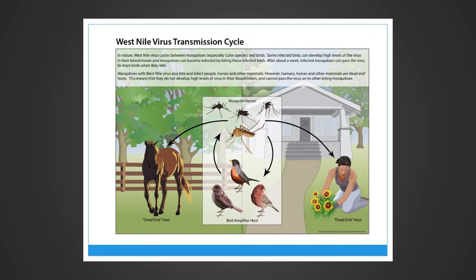In nature, West Nile virus circulates between mosquitoes and birds. An infected mosquito bites a bird; the bird gets infected and develops high enough levels of viremia that when another mosquito bites it, the bird can transmit West Nile back to the mosquito. That infected mosquito can then transmit the virus within about a week. Humans and other mammals are considered dead-end hosts, as we generally don't develop a high enough level of viremia to transmit it back to a mosquito.